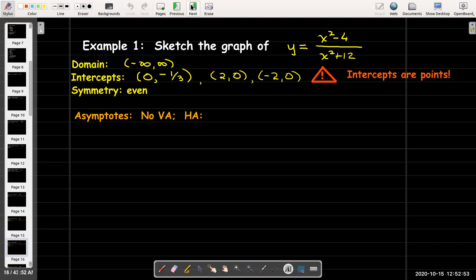For horizontal asymptotes, I need to calculate the limit as x approaches infinity of x squared minus 4 over x squared plus 12. Or I could use knowledge from algebra if I remember. But if I forgot, this is an easy limit to calculate. We'll multiply top and bottom by 1 over x squared. Then I'll be left with the limit as x approaches infinity of 1 minus 4 over x squared, all over 1 plus 12 over x squared.